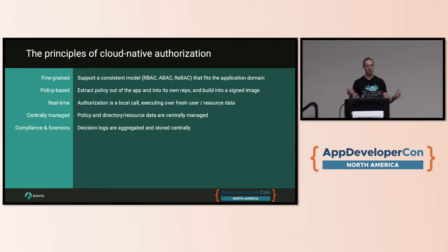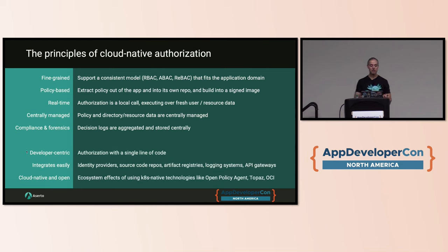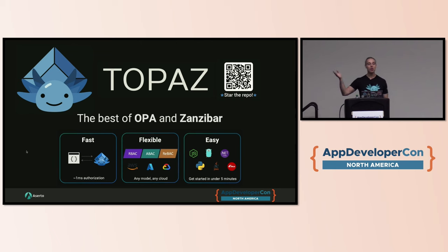Just to bring this home, going through what we call the principles of cloud native authorization: if you're trying to build one of these at home, I strongly suggest you follow these principles. Make it fine-grained, policy-based, and real-time. Make it centrally managed, and make sure you collect decision logs for compliance and forensics — super important for larger organizations. From a non-functional perspective, you want it to be super simple so that it's easier for a developer to use the middleware than to roll their own. You want it to integrate with everything — API gateways, identity providers, and so on. And make it based on open source and open technologies like OPA, Topaz, and OCI. Topaz does authorization in under a millisecond. It's flexible — it does RBAC, ABAC, ReBAC, or any combination. And it's easy to incorporate — you can bring it in under five minutes.